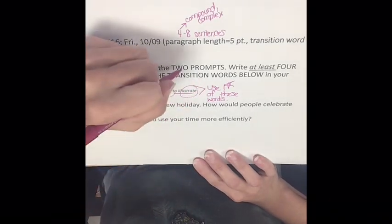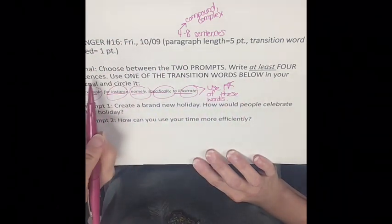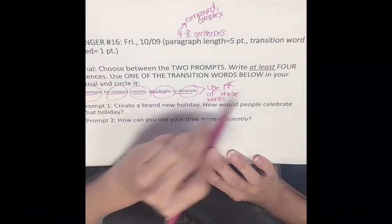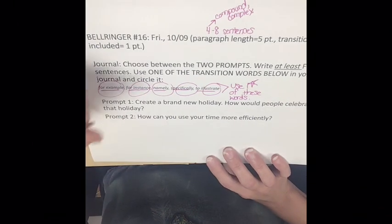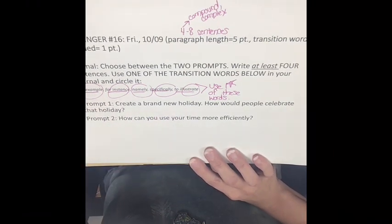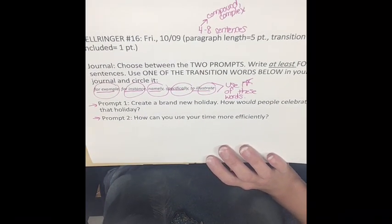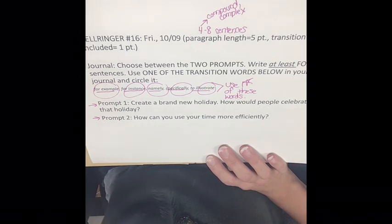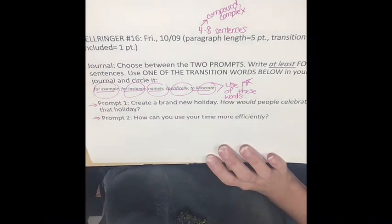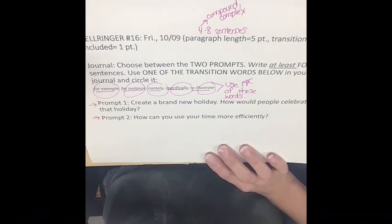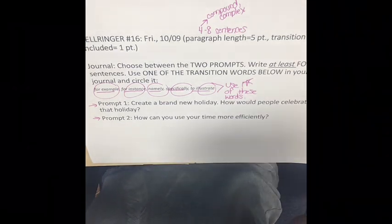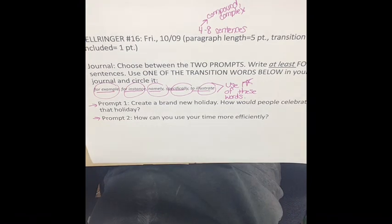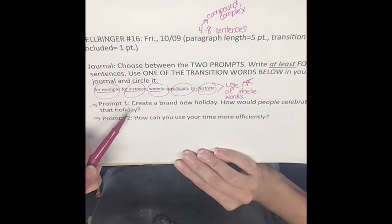Choose between the two prompts — you have two, pick one. Write at least four sentences. Use one of the transition words and circle it. Prompt one is a little bit more creative: create a brand new holiday — how would people celebrate that holiday? Is your holiday going to be national apple day? Go nuts day? Make up a brand new holiday and describe how people would celebrate it. Be creative.